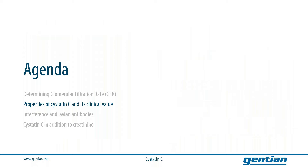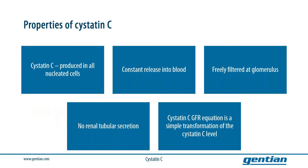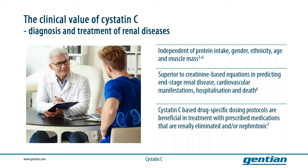We are now going to look into the clinical value of cystatin C. All nucleated cells produce cystatin C, and cystatin C is released into the blood constantly as a result of this production. The cystatin C is then filtered by the kidneys with no tubular secretion. The cystatin C level can easily be used to estimate the GFR by the use of an equation. The cystatin C provides added value when determining the GFR as the cystatin C values are independent of race, independent of protein intake, gender, muscle mass, and age.